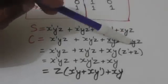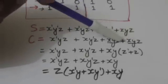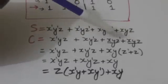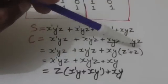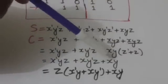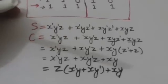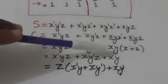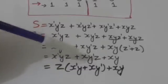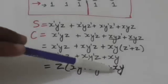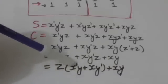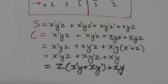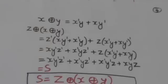Looking at the expression for C, the terms xyz' and xyz differ by only one variable — z appears in complement form in one and normal form in the other. Their sum gives xy(z' + z) = xy, since z' + z = 1. For the remaining two terms x'yz + xy'z, we factor out z to get z(x'y + xy'). This is an exclusive-OR function, that is x XOR y.